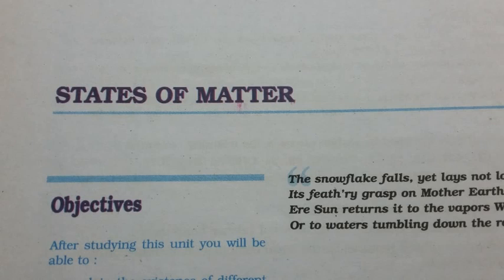5.10.1 Vapor Pressure. If an evacuated container is partially filled with a liquid, a portion of the liquid evaporates to fill the remaining volume of the container with vapor. Initially, the liquid evaporates and pressure exerted by vapors on the walls of the container increases. After some time, it becomes constant and equilibrium is established between liquid phase and vapor phase. Vapor pressure at this stage is known as equilibrium vapor pressure or saturated vapor pressure. At the temperature at which vapor pressure of the liquid becomes equal to the external pressure, vaporization can occur throughout the bulk of the liquid — this condition is called boiling.